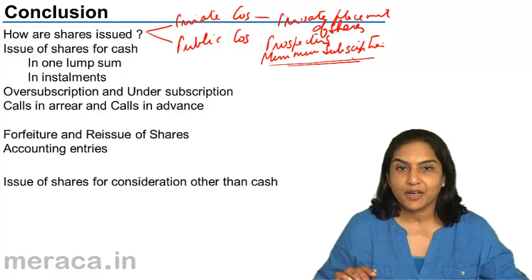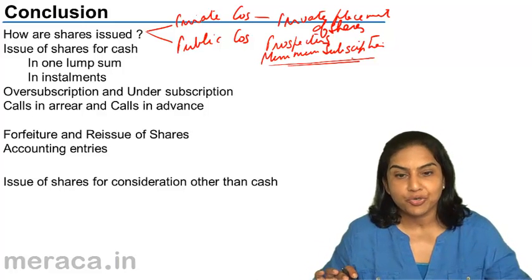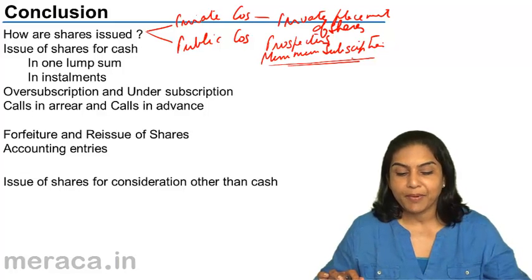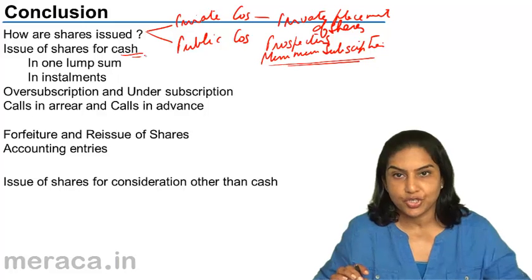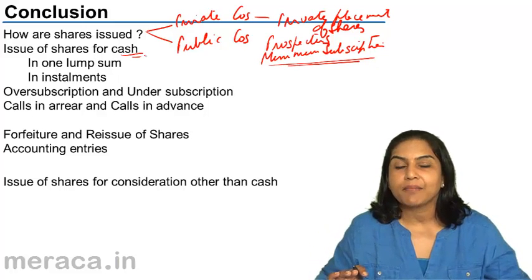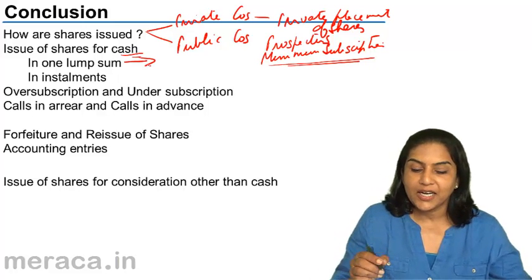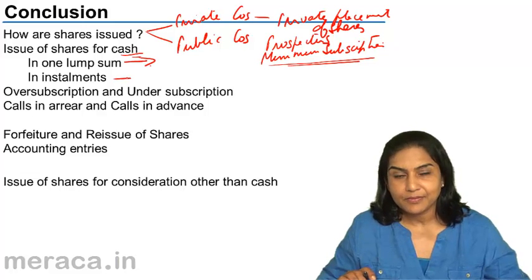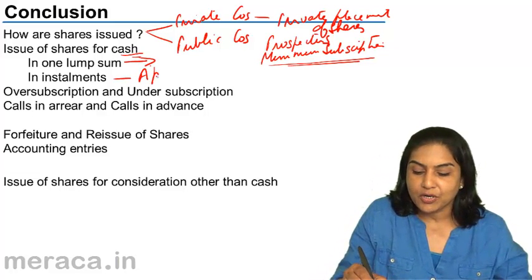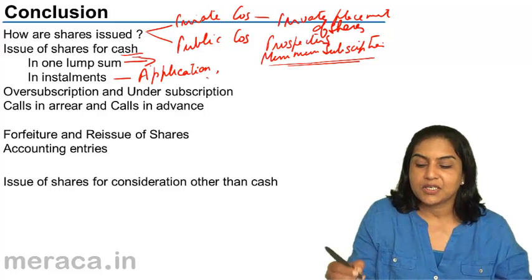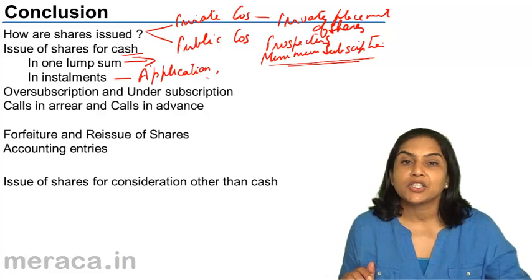If minimum subscription is not received, the money should be refunded. Shares may be issued via private placement or to the public. When issued to the public, we considered first the issue of shares for cash — the money may be paid in one lump sum. For example, when a ₹100 share is issued at par, the entire ₹100 may be collected along with the application. Alternatively, it may be collected in installments. The first installment received along with the application is called application money.